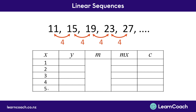In the X column we list 1, 2, 3, 4 and 5. The Y column is where you list your sequence — in this case that's 11, 15, 19, 23 and 27. So we put those down the Y column next to our X's.